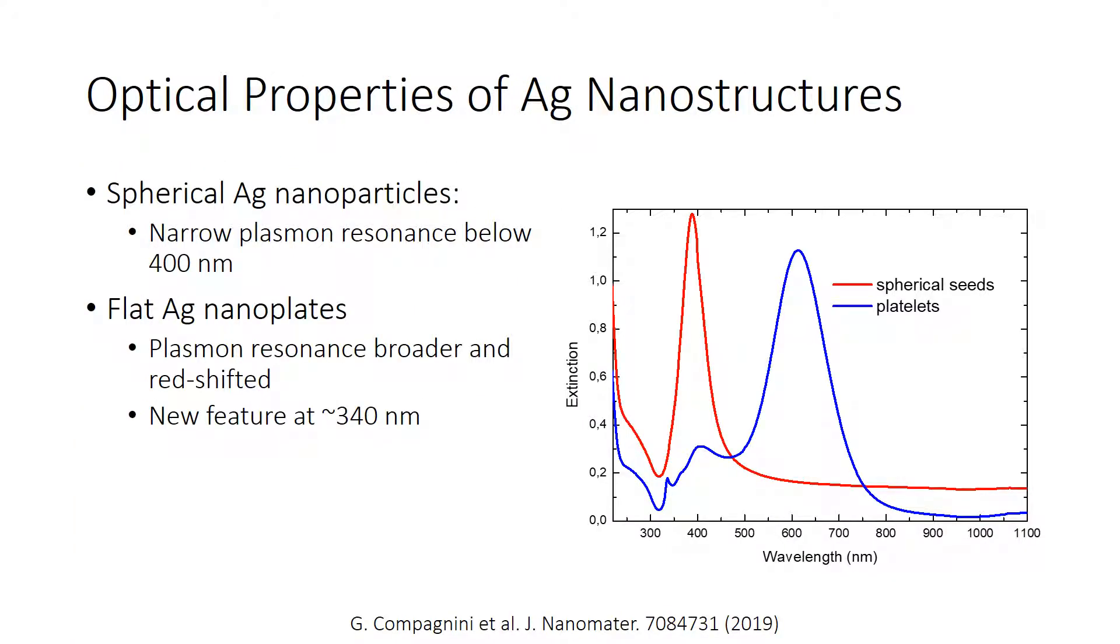Here we discuss the optical properties of silver nanostructures. The red curve represents a typical absorption spectrum of spherical silver nanoparticles obtained after the first step of the process. Spherical particles show a narrow plasmon resonance just below 400 nanometers.